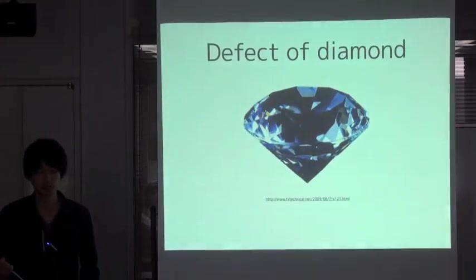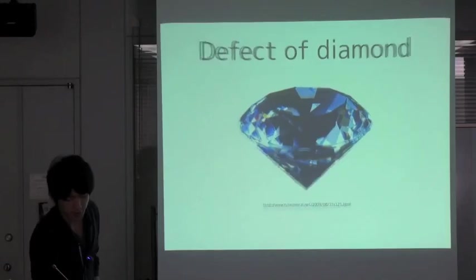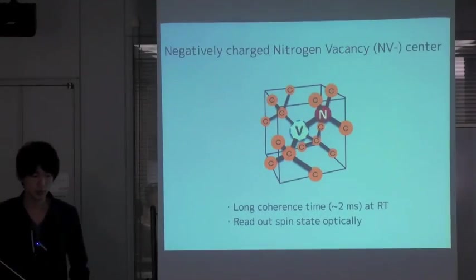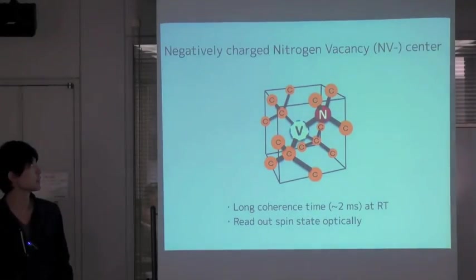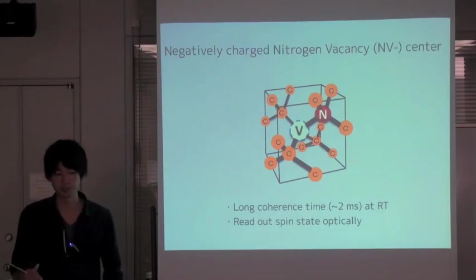We use defect of the diamond. Let's see diamond structure. In diamond structure, there are negatively charged nitrogen vacancy centers, NV minus center.